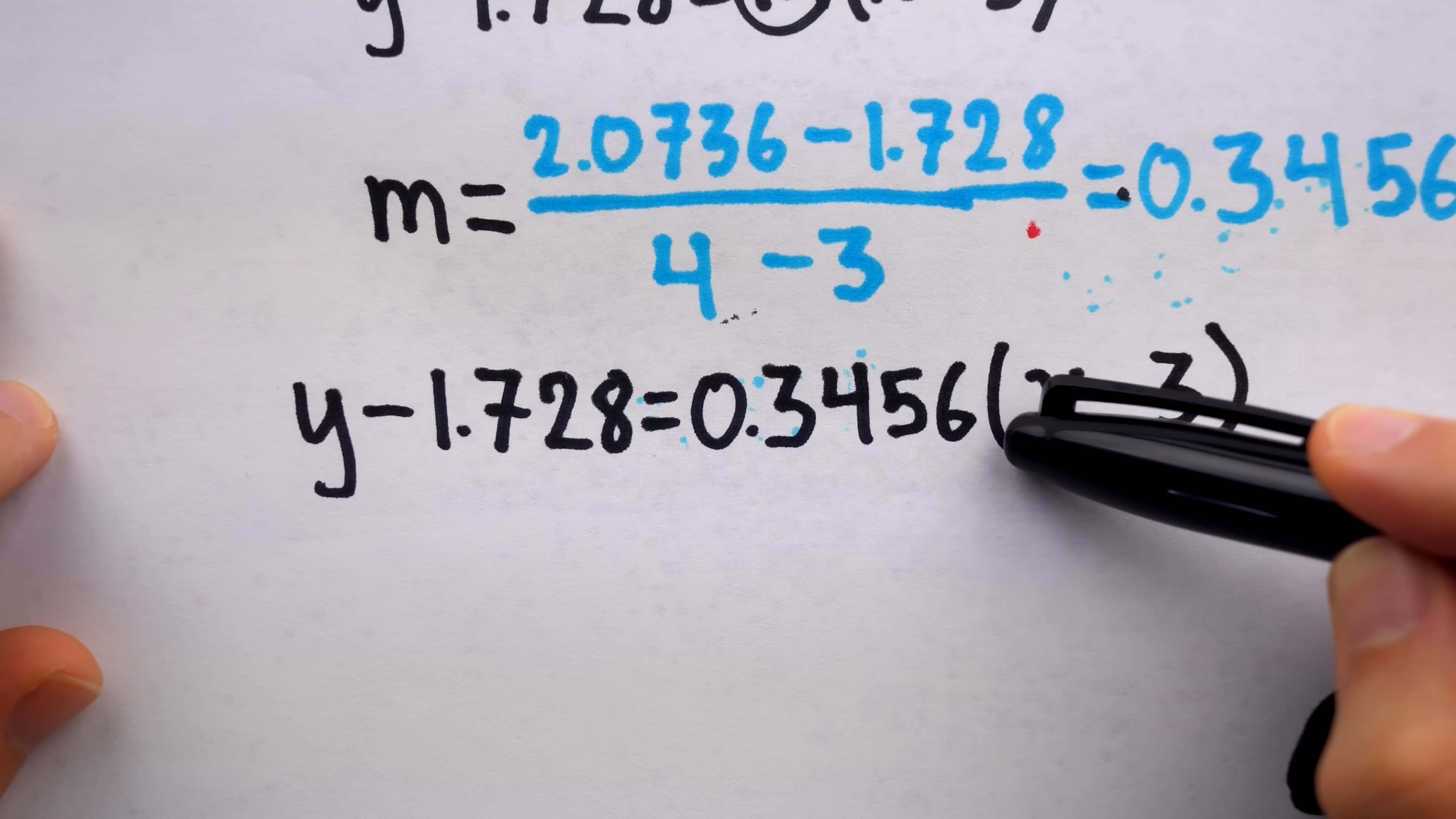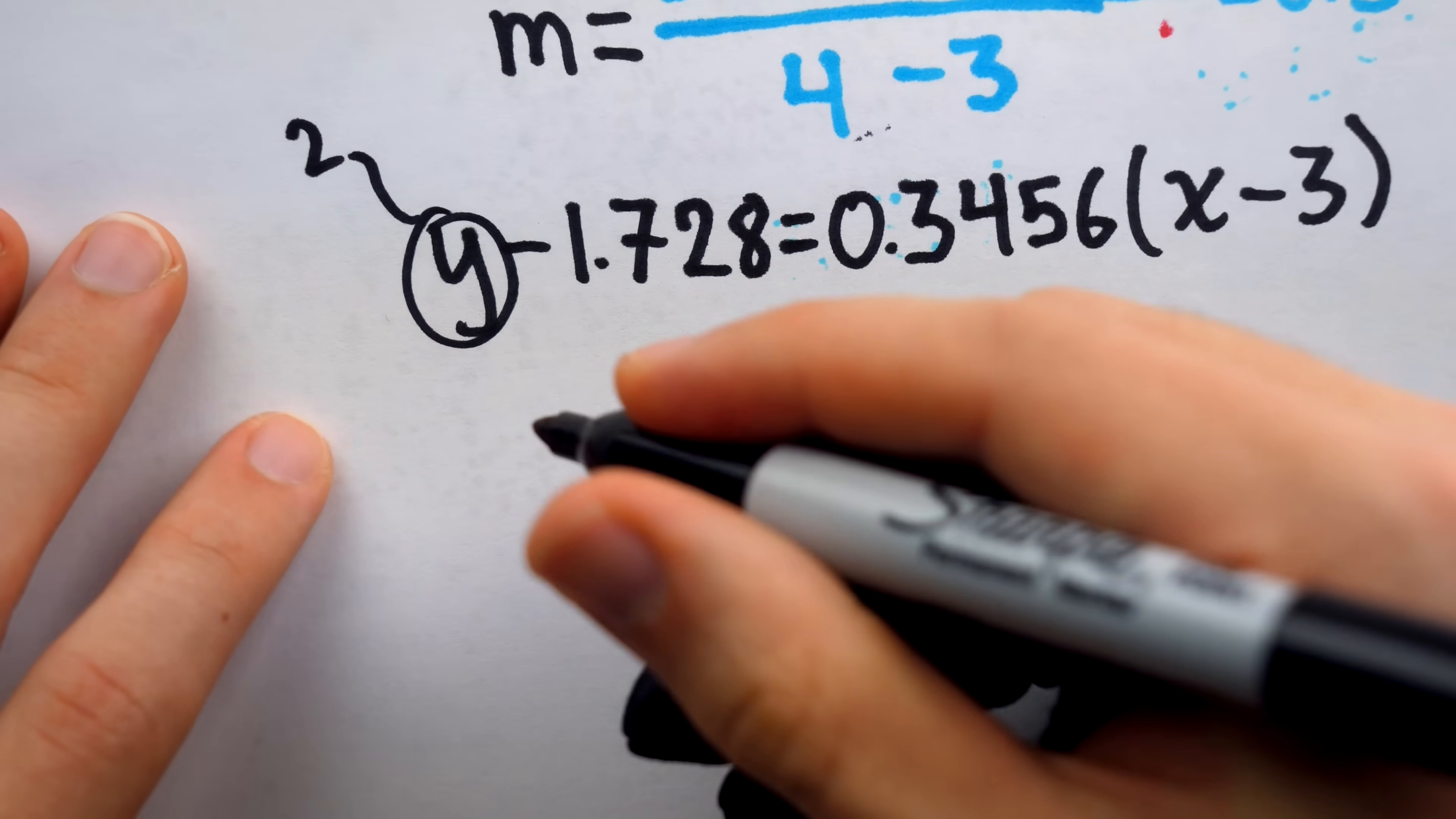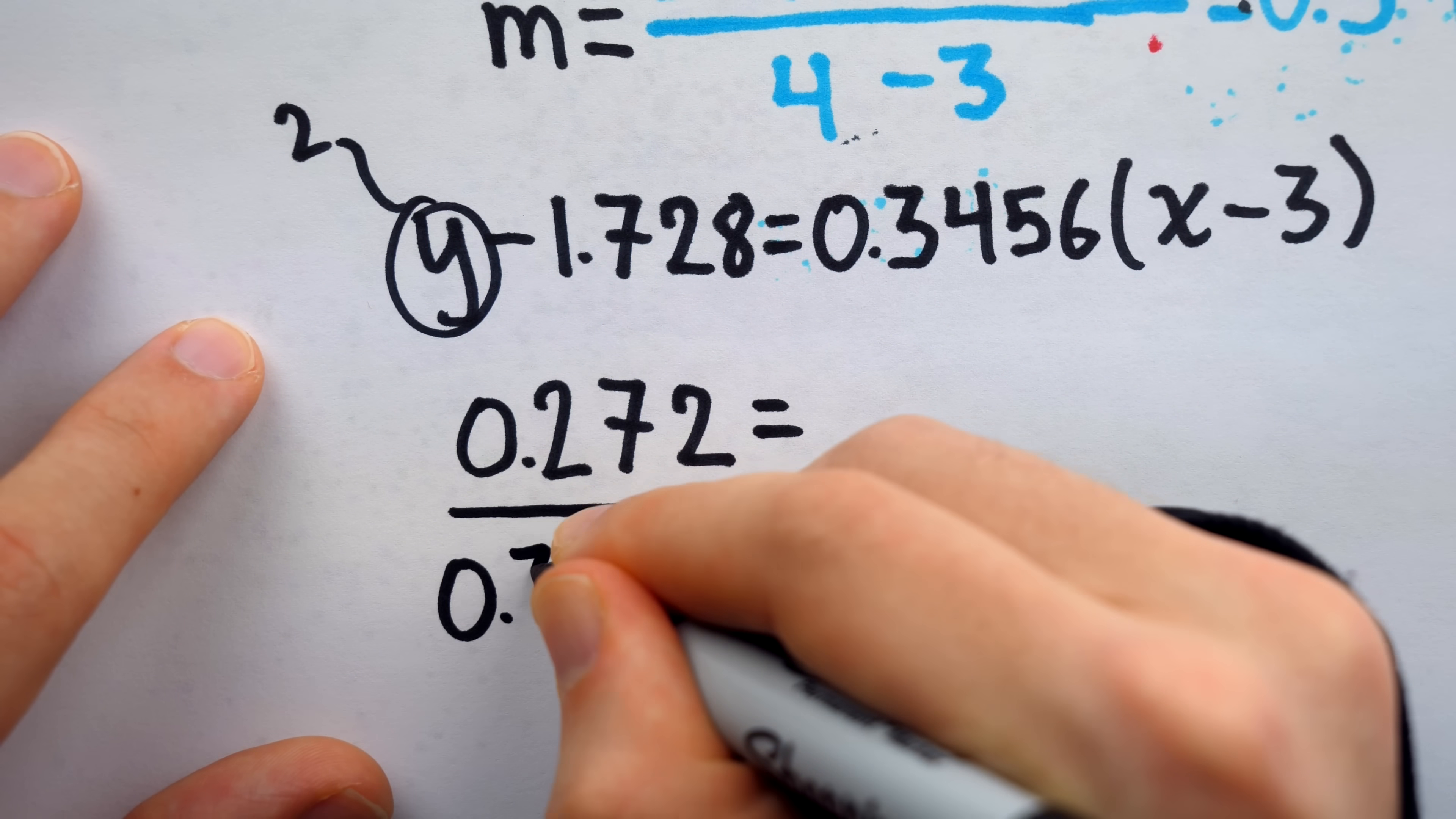Remember, x is the duration that the money is invested. It's the number of years that have passed. And we're trying to find x so that y is equal to 2. Hence, we'll replace y with 2. 2 minus 1.728 is 0.272. And on the right side, we're going to want to get x by itself. So why don't we just go ahead and divide both sides by 0.3456 now. So we'll put this over 0.3456.